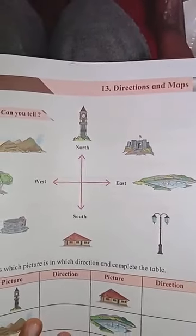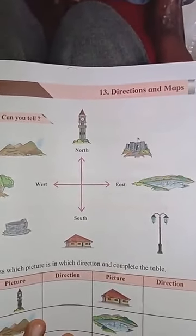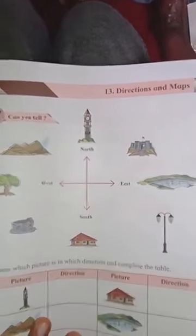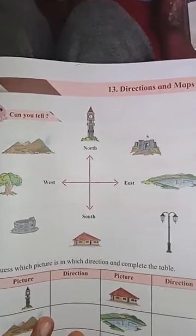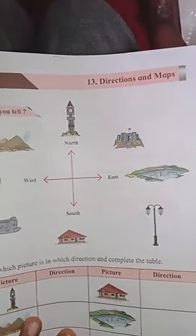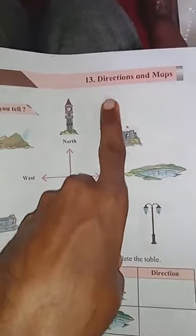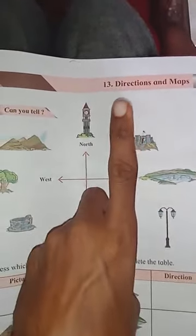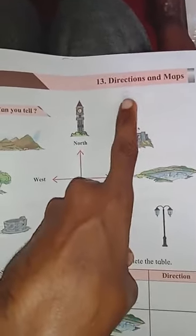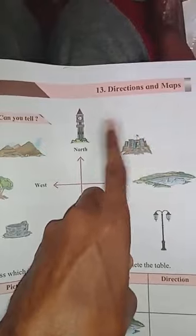Good morning everyone. Today we are going to study EBS Part 1 - Environmental Studies Part 1 of Standard 4. We will start with the second term portion, Chapter 13: Directions and Maps. We are going to see these two topics together - directions and maps.